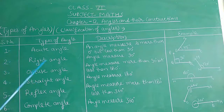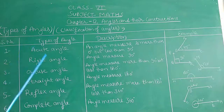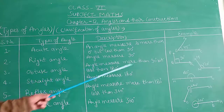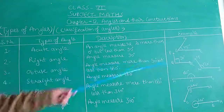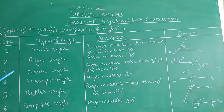The third type is obtuse angle. An angle measuring greater than 90 but less than 180 degrees is called an obtuse angle. As seen in the figure, 120 degrees, 135 degrees, and 110 degrees are all examples of obtuse angle.